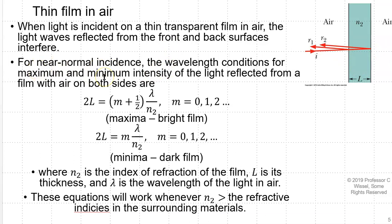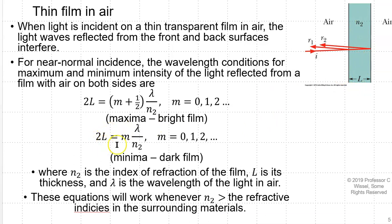For near-normal incidence, the wavelength conditions for maximum intensity of light reflected from a film with air on both sides are: 2L = (m + ½)λ/N₂ for m = 0, 1, 2 — this is for maxima, i.e., what you see in the reflected light. L is the thickness of the film and N₂ is the index of refraction of the middle medium. For minima: 2L = mλ/N₂ for m = 0, 1, 2.